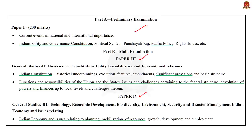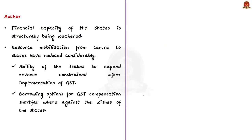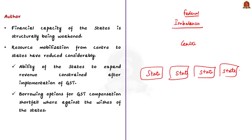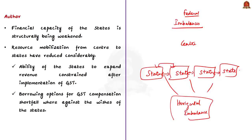India is a federal economy and we have imbalances between the functional responsibilities and financial resources of the central and state governments. There are two types of imbalances: horizontal imbalances, which are imbalances between the states — because states differ in resources, level of development, and per capita income; and vertical imbalance, which is the imbalance between the central government and the state governments, usually due to disproportionate alignment of revenue sources.